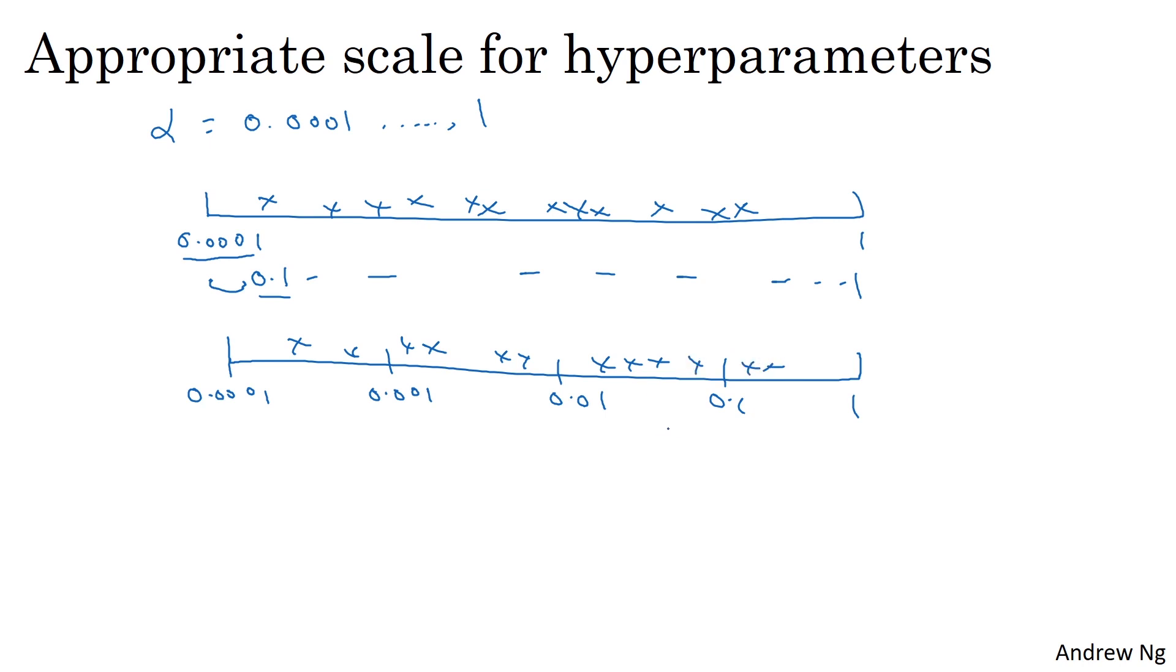Now, you have more resources dedicated to searching between each interval on the log scale. So in Python, the way you implement this is let r equals negative 4 times np.random.rand. And then a randomly chosen value of alpha would be alpha equals 10 to the power of r.